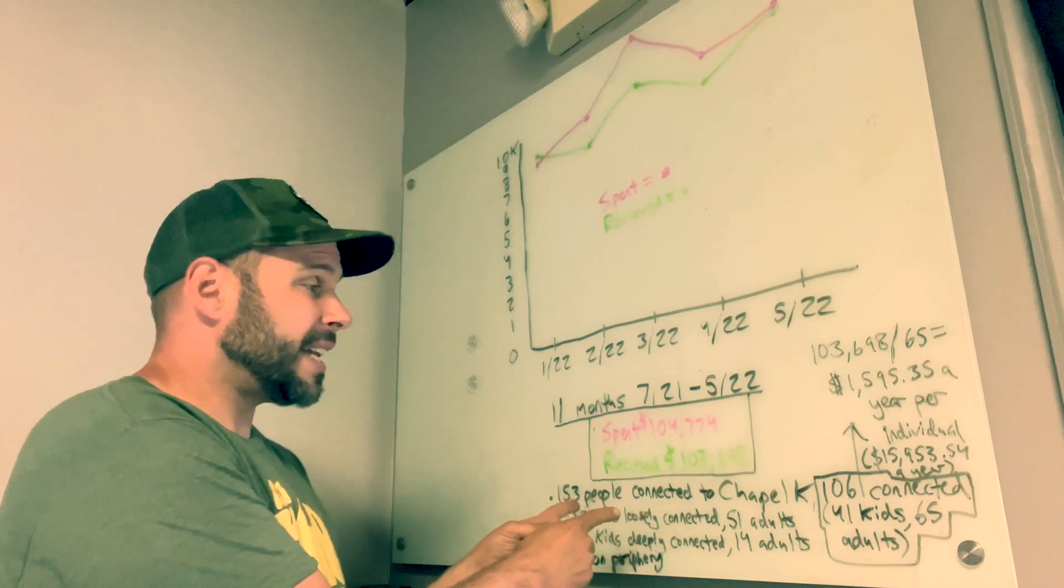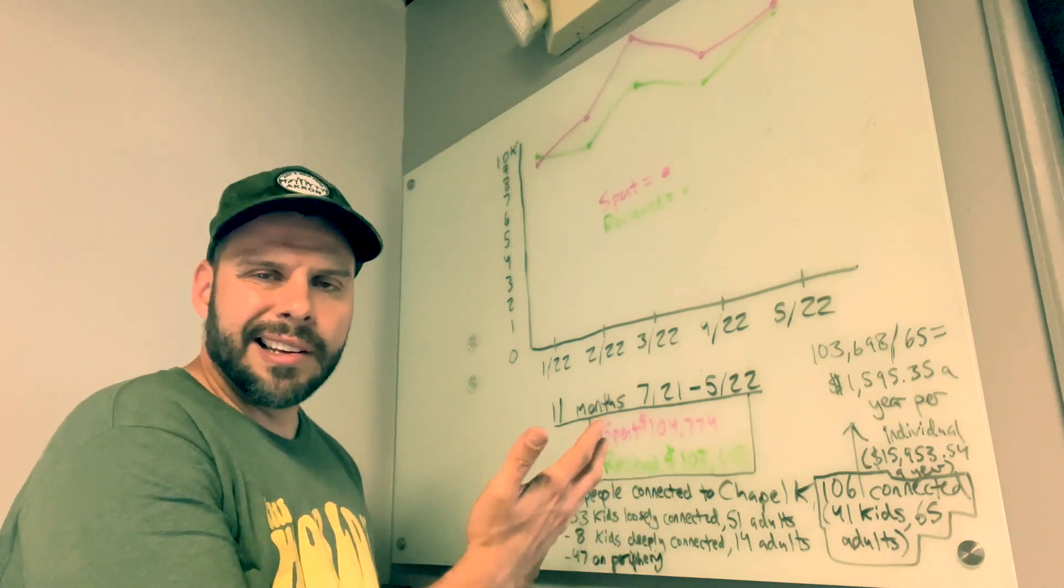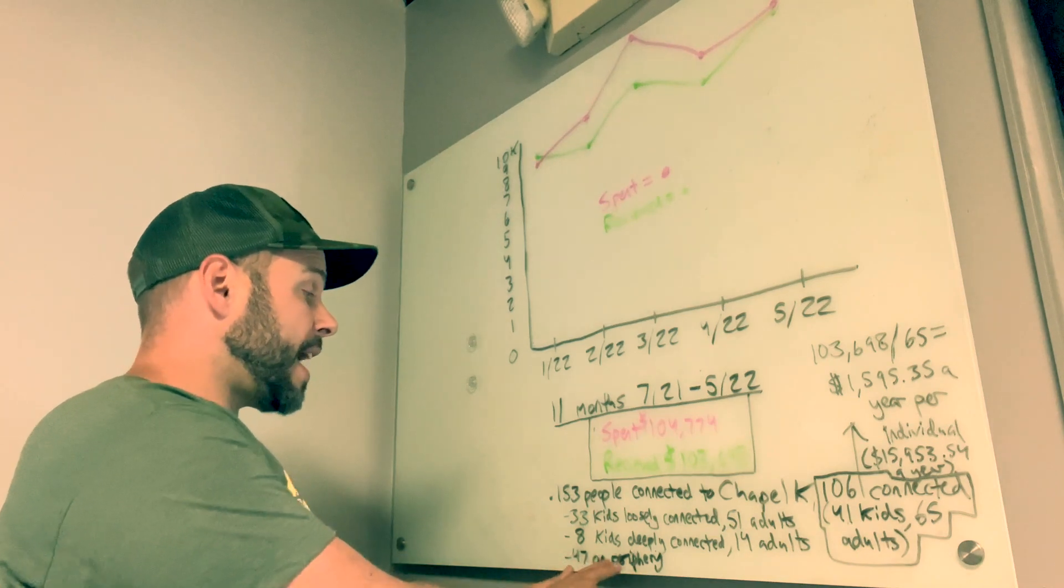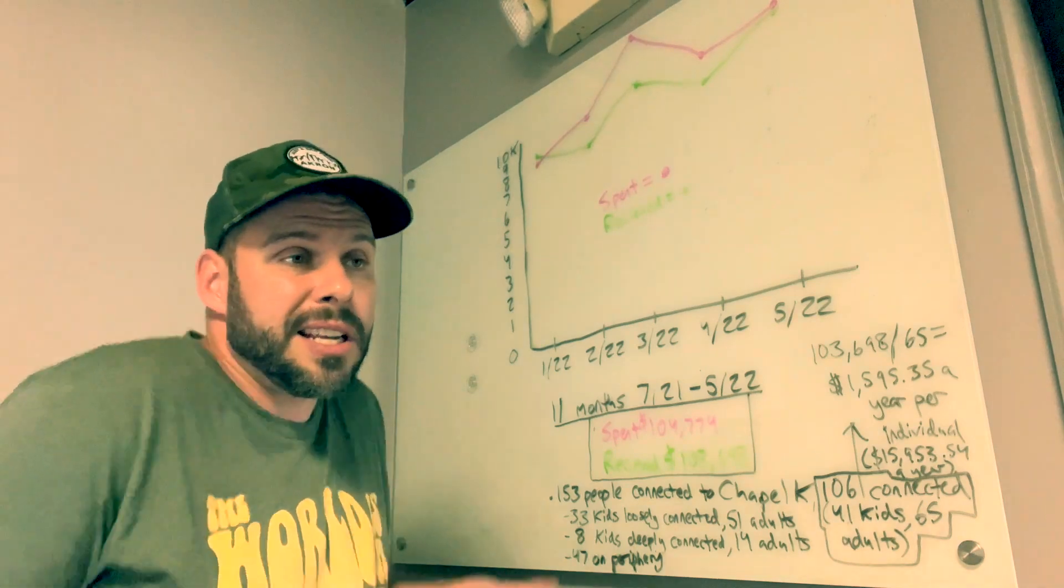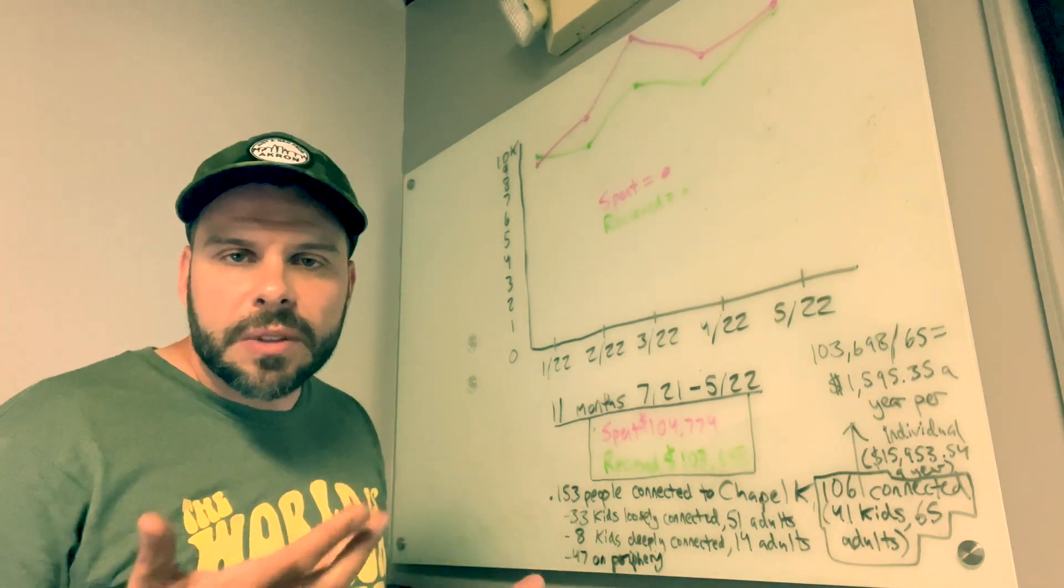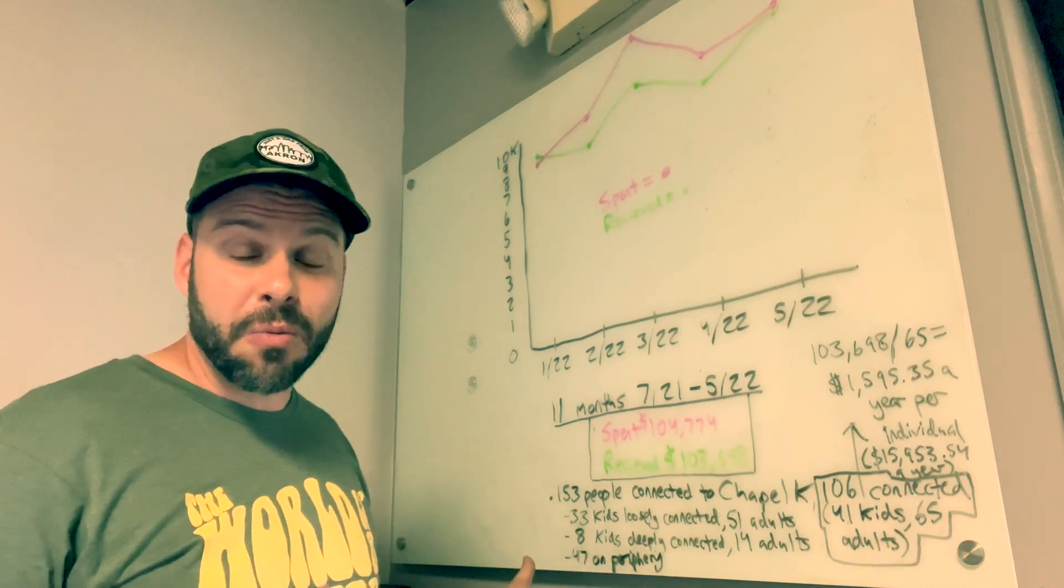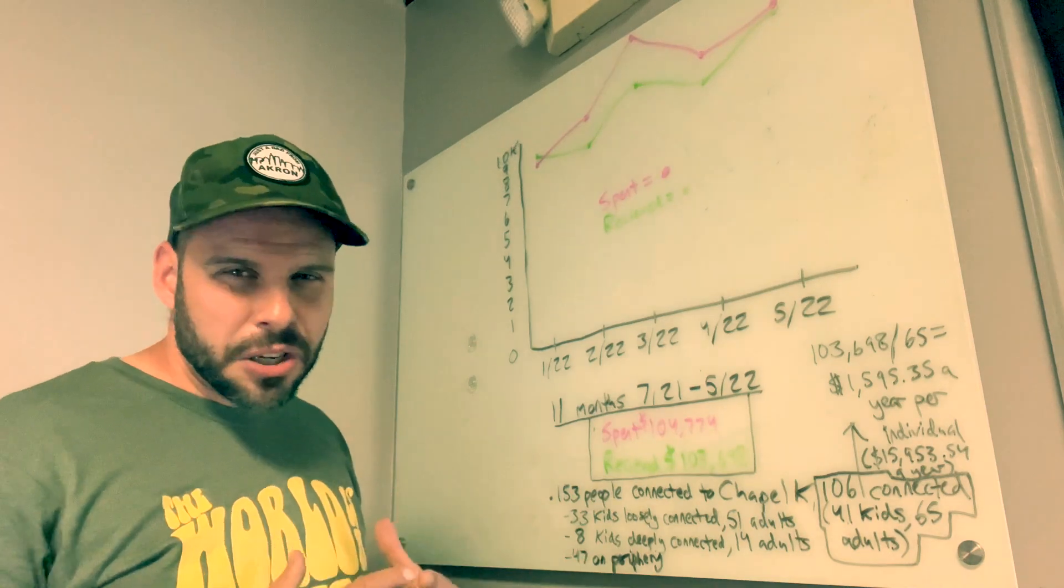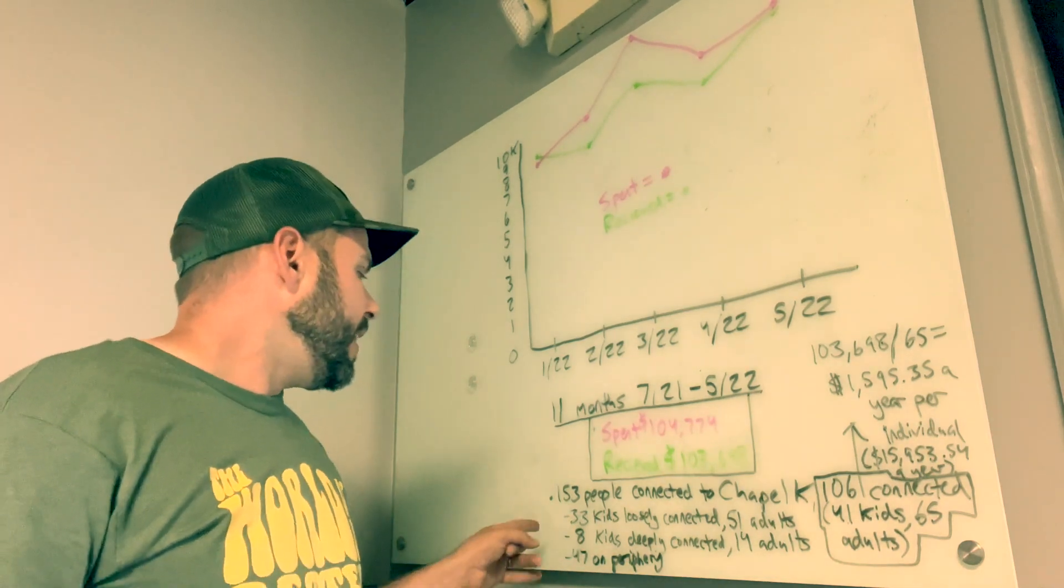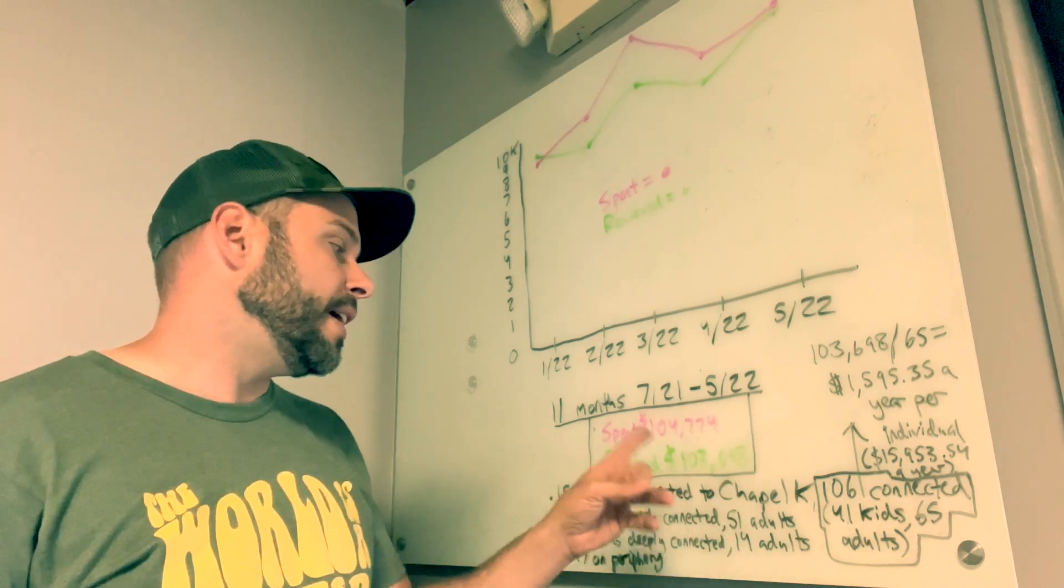We have about 153 people connected to Chapel Kenmore as of the last statistic we looked at. We keep a running list of just saying who is connected to us, who actually calls this their church home. We've roughly come up with the number of 153. Now you gotta understand 47 out of those 153 people are on the periphery. They do show up occasionally, they might come on a Sunday gathering, they might be loosely connected with a DNA discipleship group. But we kind of don't know whether they're connected or whether they aren't.